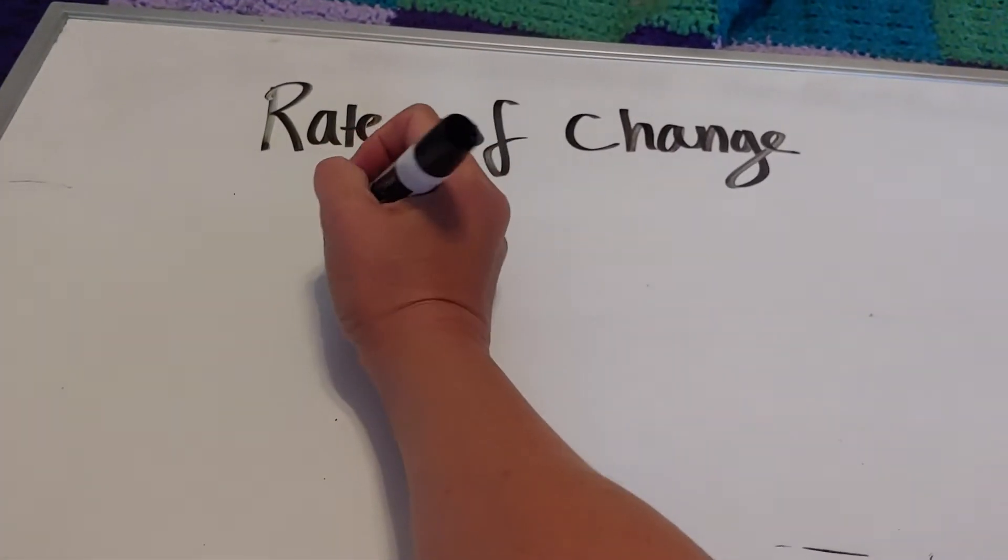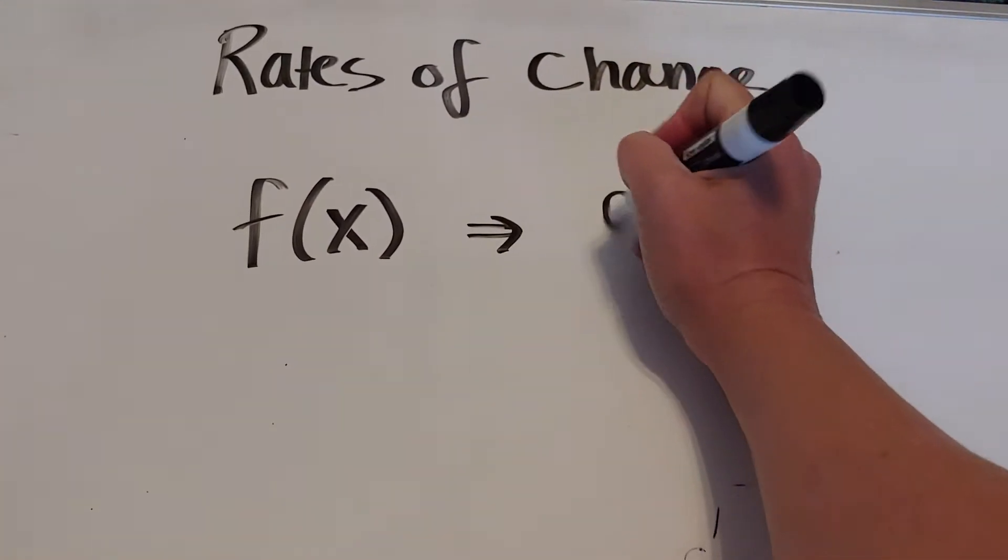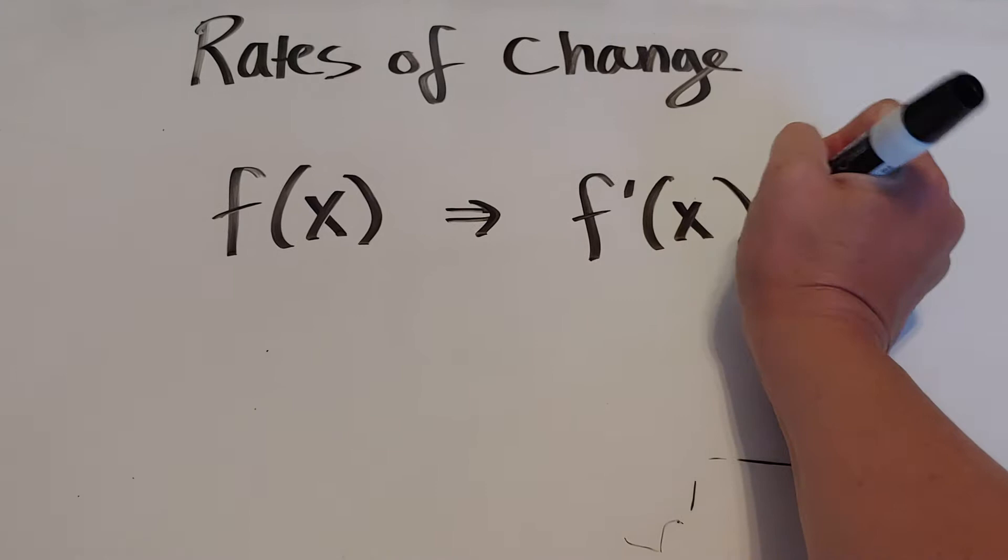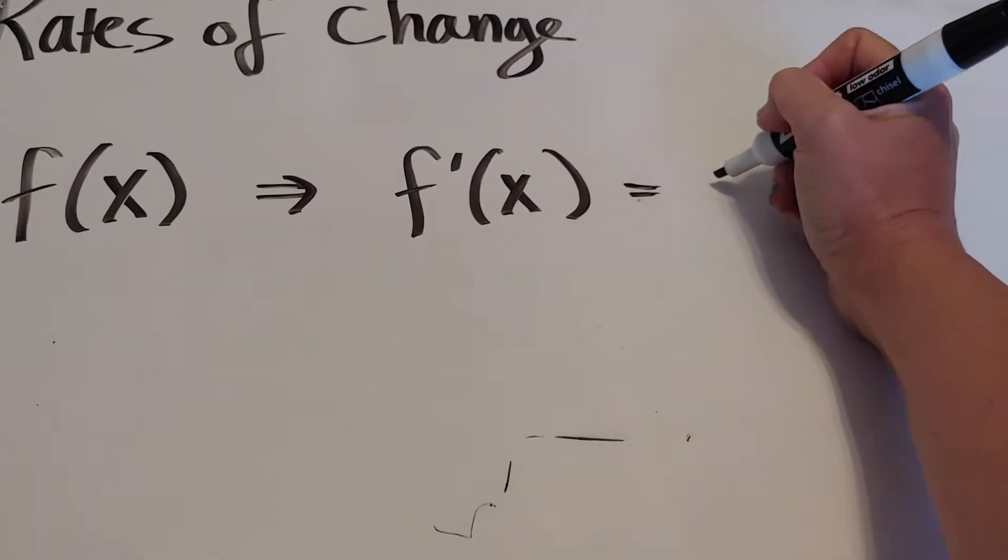What I want to talk about is that if we have a function, we can find the derivative. Now, this derivative is the instantaneous slope.